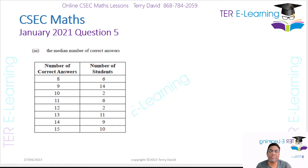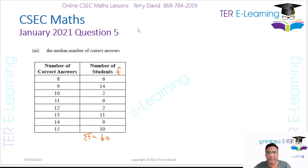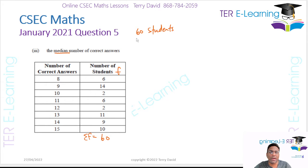The next part asks us to determine the median of the correct answers. Now the question didn't tell us how many students we have, so we need to add up the frequency column to find out. That's 4 and 16 is 20, 22, 28, 30, 41, 50 — giving me a total of 60 students. So we want to find the middle value. Because we have 60 students and 60 is an even number, we can't get an exact middle, so we need to find the 30th and the 31st student and figure out what their scores would be.